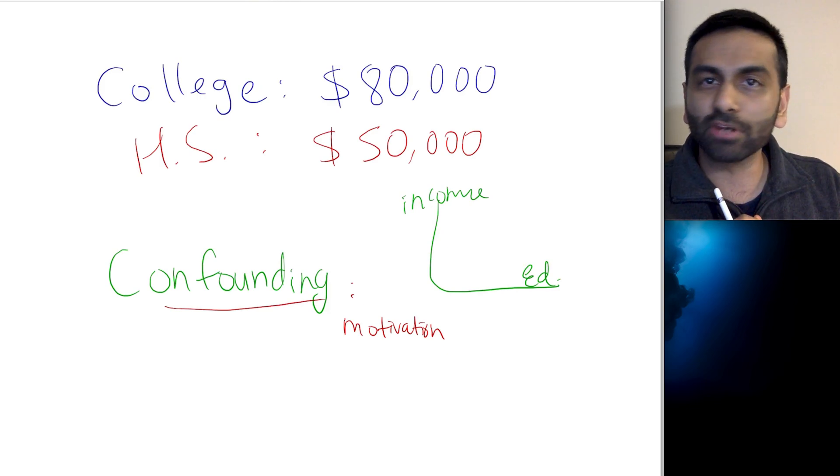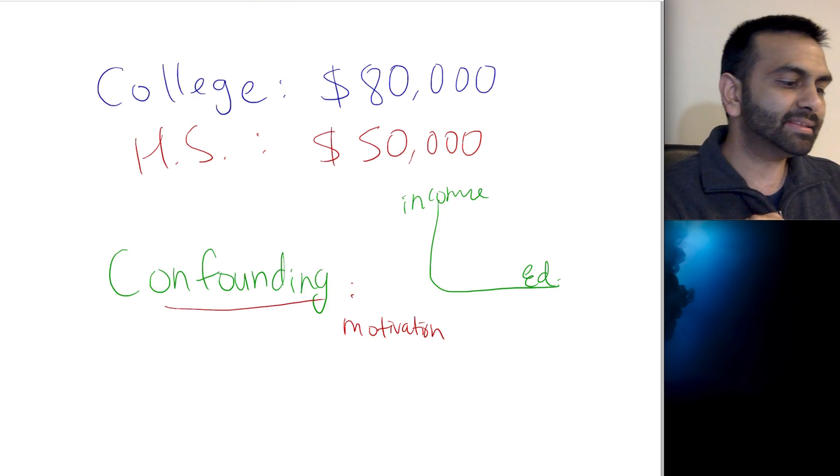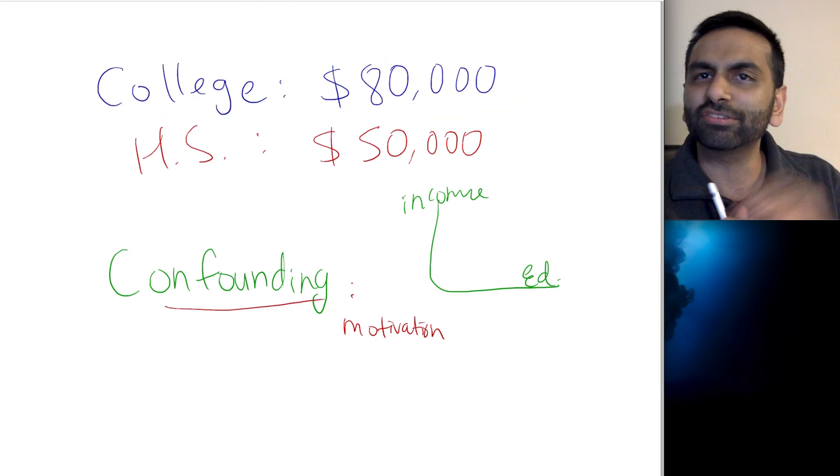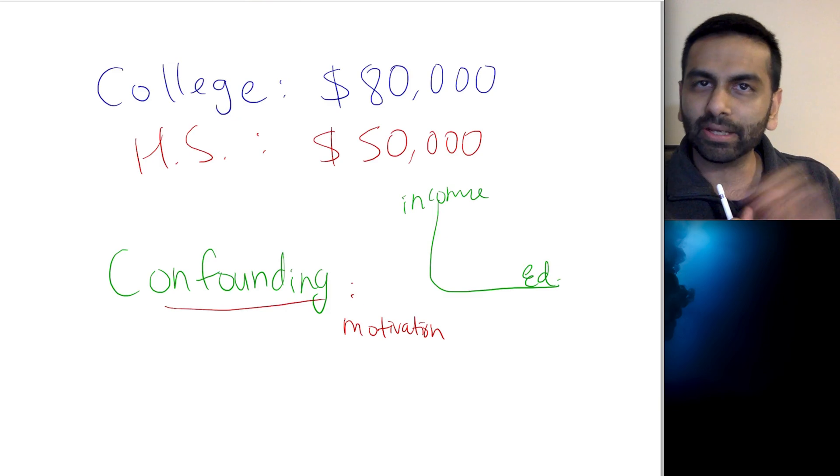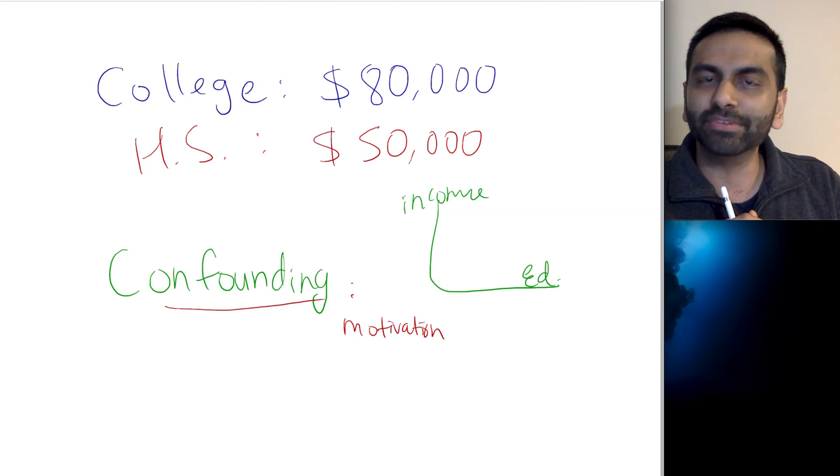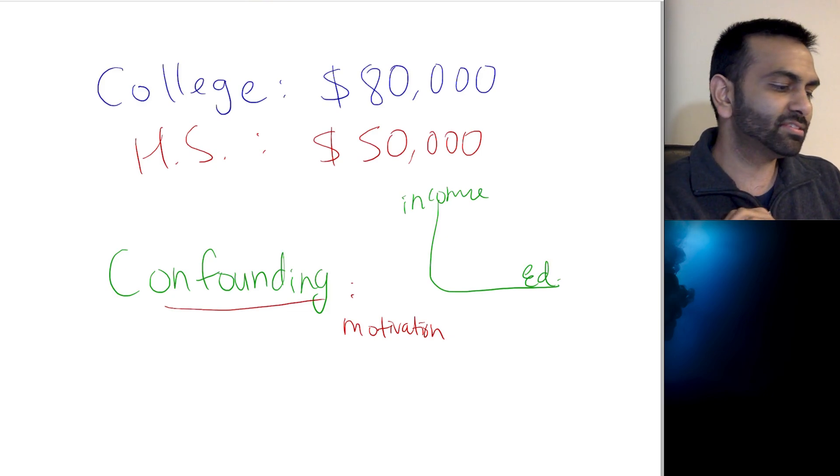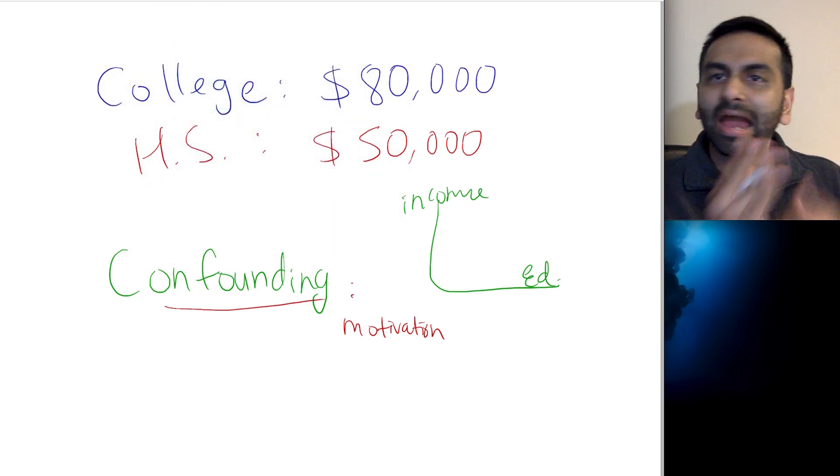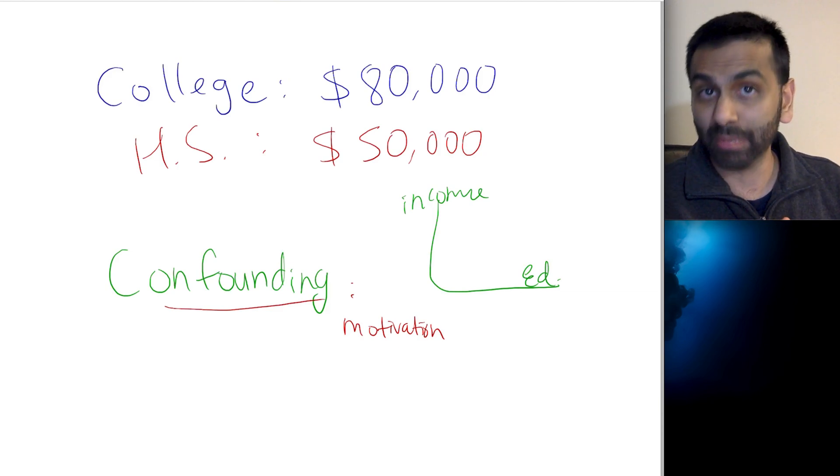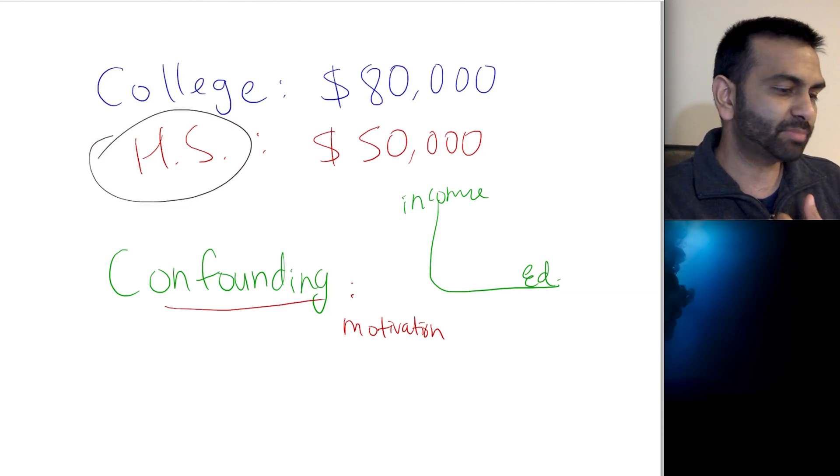Well, now, all of a sudden, we have no idea whether this $80,000, this $30,000 extra premium from going to college is because college is causing that, or if it just so happens that it's actually motivation that's doing the causing of this higher salary, and that this group of people, those with college degrees, happen to be a more motivated group of people, on average, than this group of people.